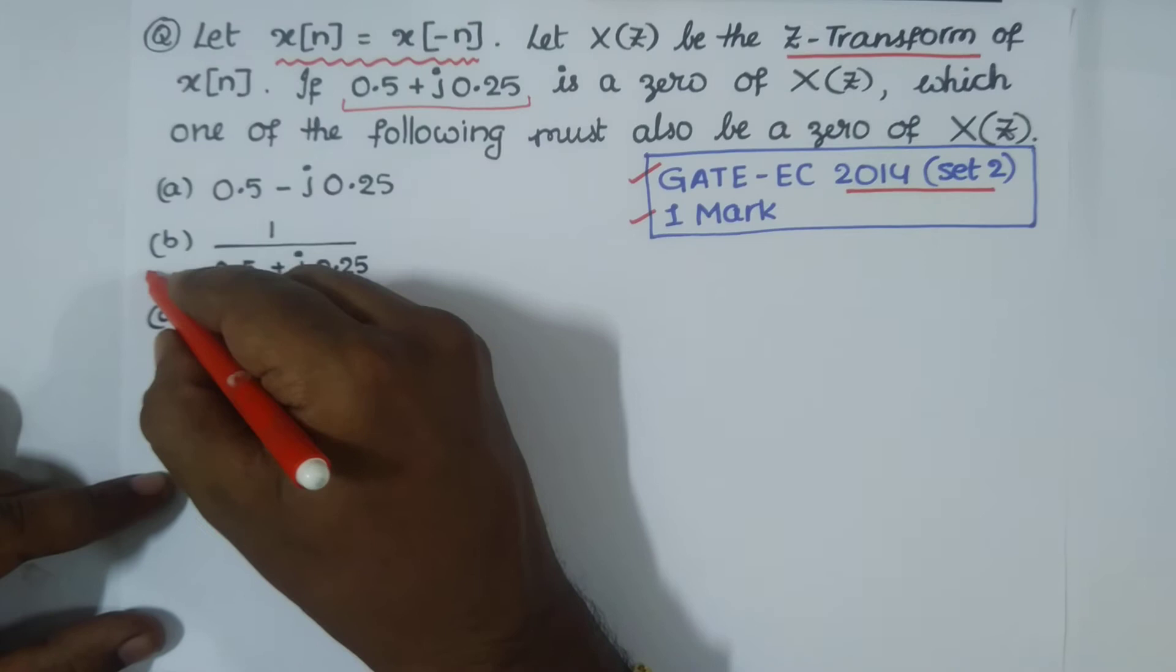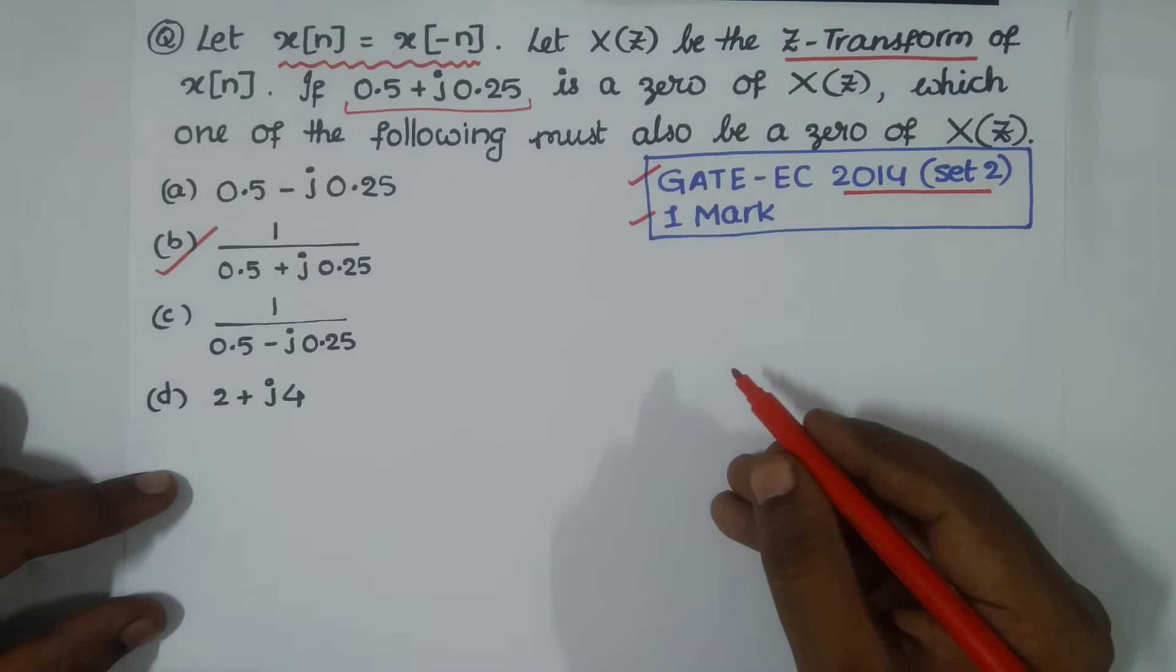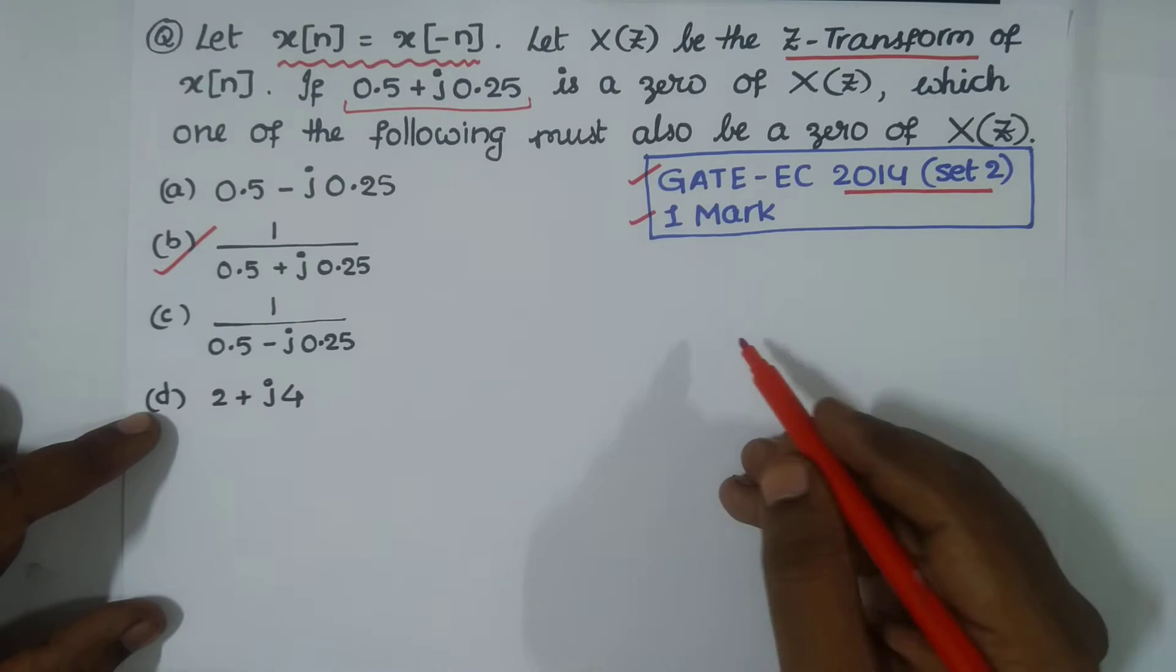It is a straightforward question. Without any second thought, in one second we can go for option B. If you have a little idea of these properties, in no time you could go for option B. We can mark this correct option without putting pen on paper.